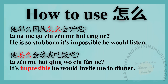他怎么会请我吃饭呢? — It's impossible, he would invite me to dinner. 他那么固执怎么会听呢? — He is so stubborn, it's impossible he would listen.